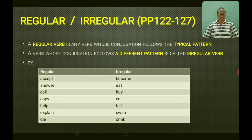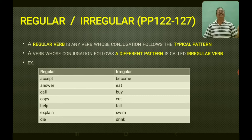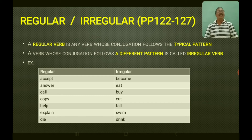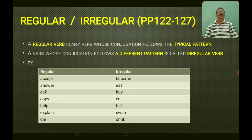Now look at irregular verbs: become — became — become; eat — ate — eaten. The pattern is not the same. Further examples: buy — bought — bought; cut — cut — cut; fall — fell — fallen (F-E-L-L, F-E-L-L-E-N); swim — swam — swum; drink — drank — drunk. They are all called irregular verbs. So now you have come to know about finite, non-finite, regular, and irregular verbs.